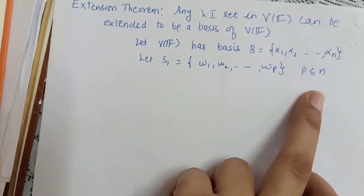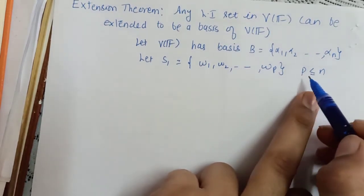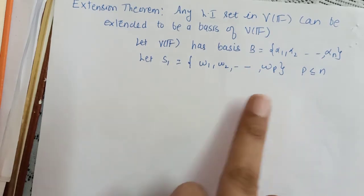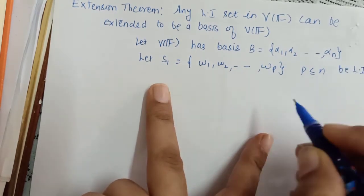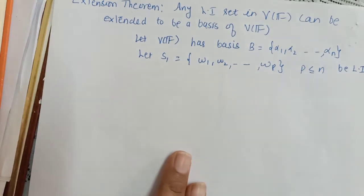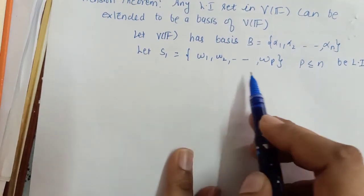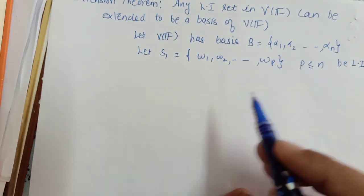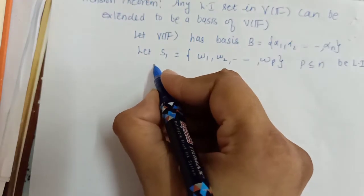Now p must always be less than or equal to n, as per the Replacement Theorem — any set with more than n vectors would be linearly dependent. So in an n-dimensional vector space, if a set is linearly independent, it must have at most n elements.